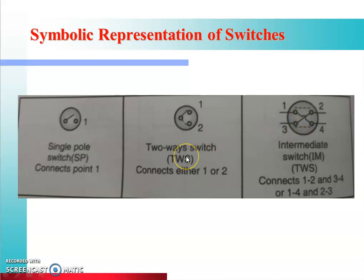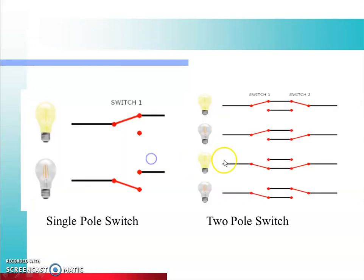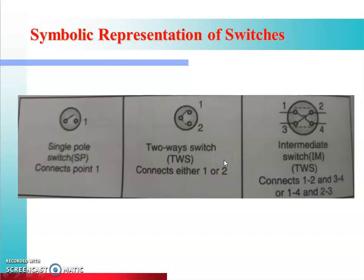Kisi bhi circuit ko control karne ke liye, kisi bhi lamp ko control karne ke liye, ek control produce karne ke liye, hamin switches ki zarurat hoti hai jo on ya off — jo required condition hamin chahiye woh create karti hai. So switches ke tine types hain: single pole, two-way, aur intermediate switch. Single pole switch ki representation mein sirf ek hi contact given hai — agar hamne switch close kar diya to yeh contact close ho jaega.